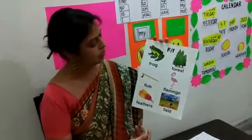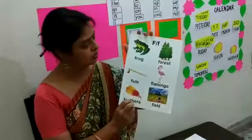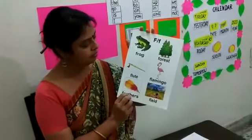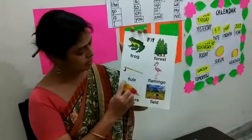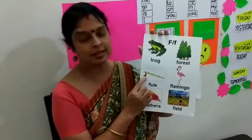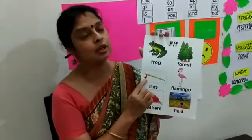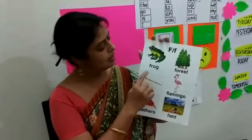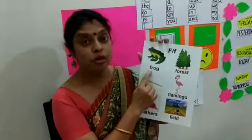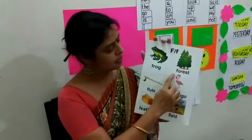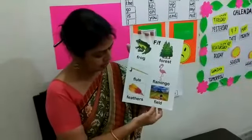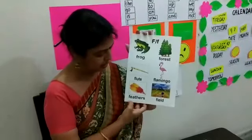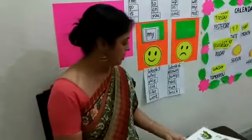So these are the vocabulary words from the F story. Flute — this is a musical instrument. Frog. Forest. Flamingo. Field. Fedora.